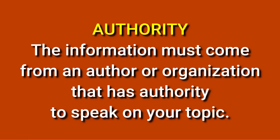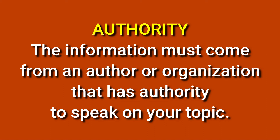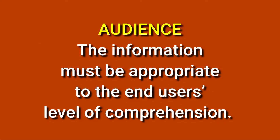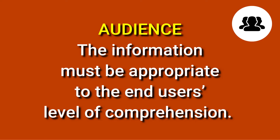The first A is for authority. The information must come from an author or organization that has authority to speak on your topic. If your topic is about diseases, you better get information from people in the field of medicine. The second A is for audience. The information must be appropriate to the end user's level of comprehension. Who is the resource's target audience? Is it for the general public or for experts in a certain field?